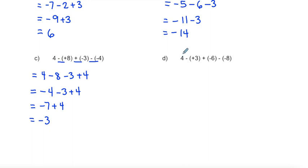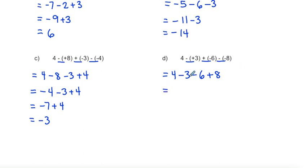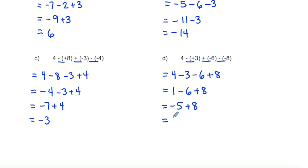Example D: eliminate extra signs — starting with four; a negative and positive make negative three; a negative and positive make negative six. Going left to right: four take away three is one; one take away six is negative five — you can use a number line, calculator, or mental math; and negative five plus eight is positive three.